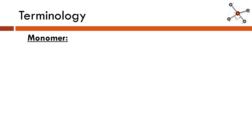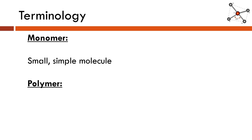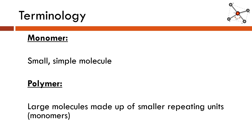Let's start off with some terminology. First up we have monomer. Given what you know about the prefix mono, you're thinking well that means one. A monomer is just going to be a small simple molecule. If we take many monomers and we join them together we get a polymer. You know the prefix poly means many, so a polymer is a large molecule.